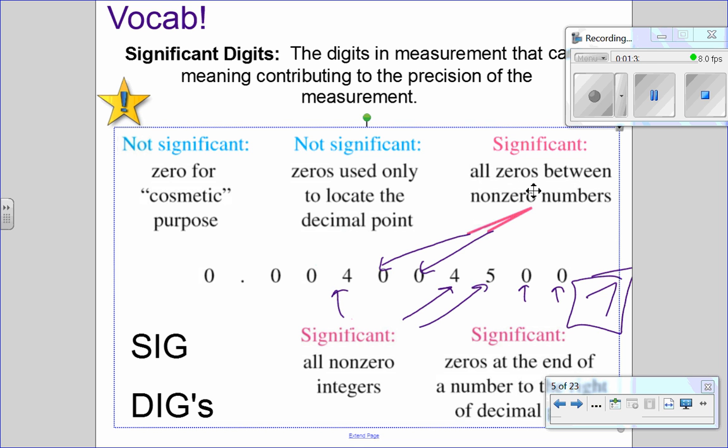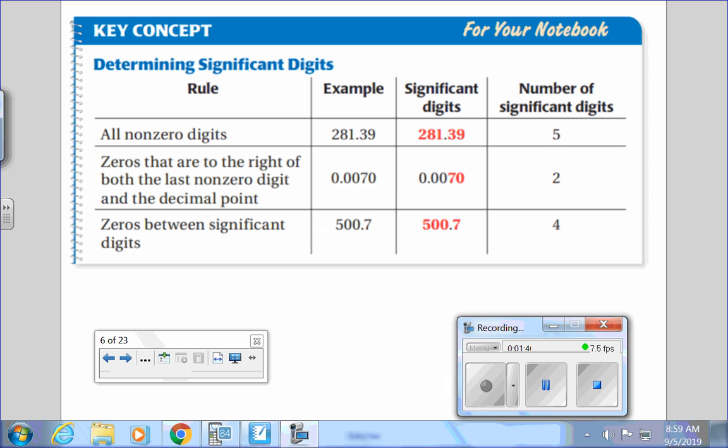And every number is a little different, so we're going to look at a whole bunch of example problems. Are we still writing? Do we need pause or are we ready to go? She's still writing. All right, we've got three more numbers here. Just to kind of look at, they're all a little bit different with where the zeros are placed. So our first example problem is 281.39. That's the easiest scenario they could ever throw at you. Since there's no zeros, every single number is significant. So I've got 1, 2, 3, 4, 5 significant digits.